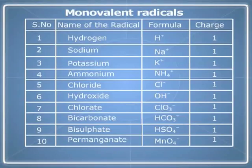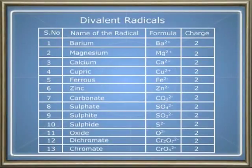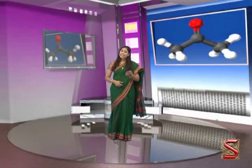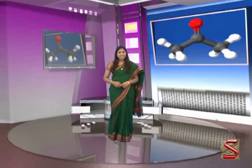Here is the list of monovalent radicals. Now let's take a look at the list of divalent radicals. Now let's take a look at the trivalent radicals. Now let's take a look at the list of tetravalent radicals as well.